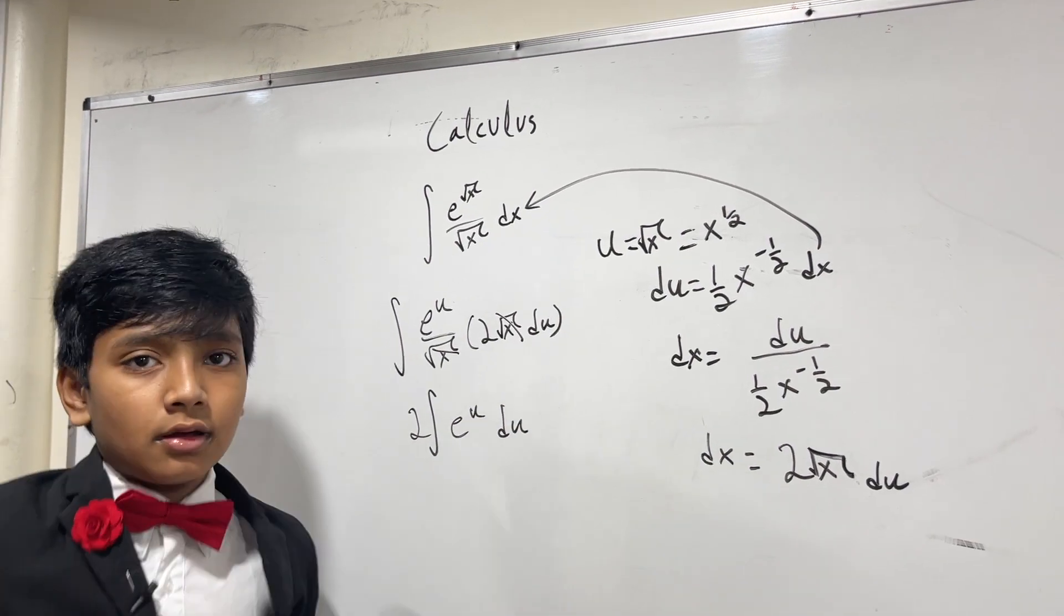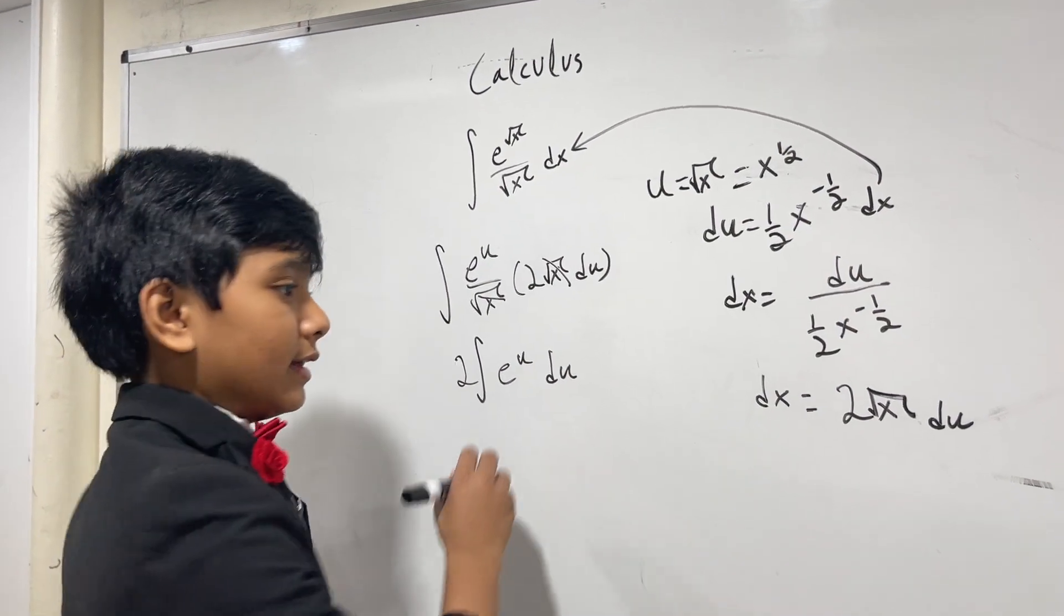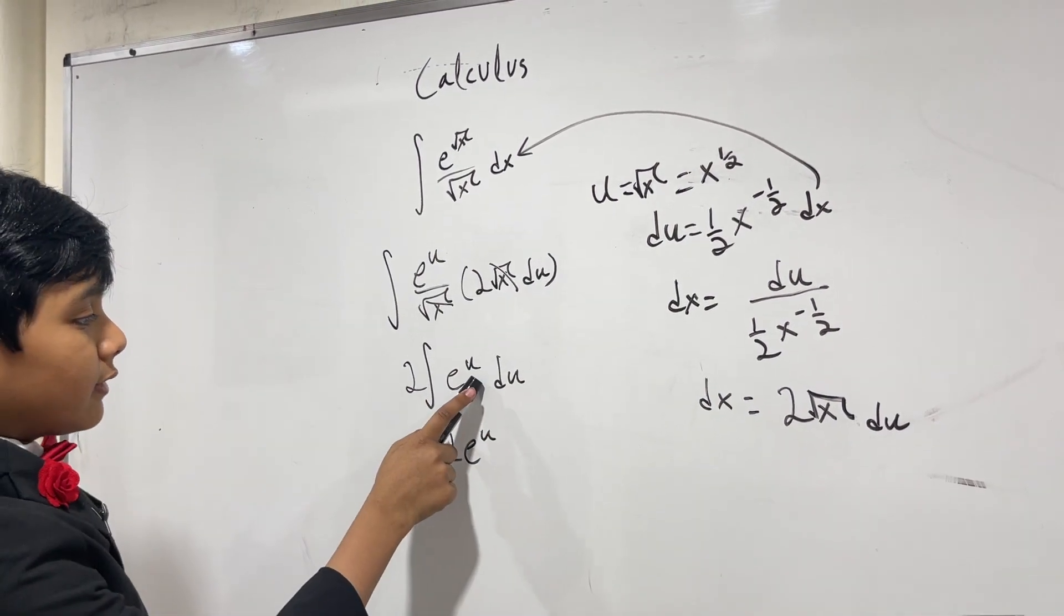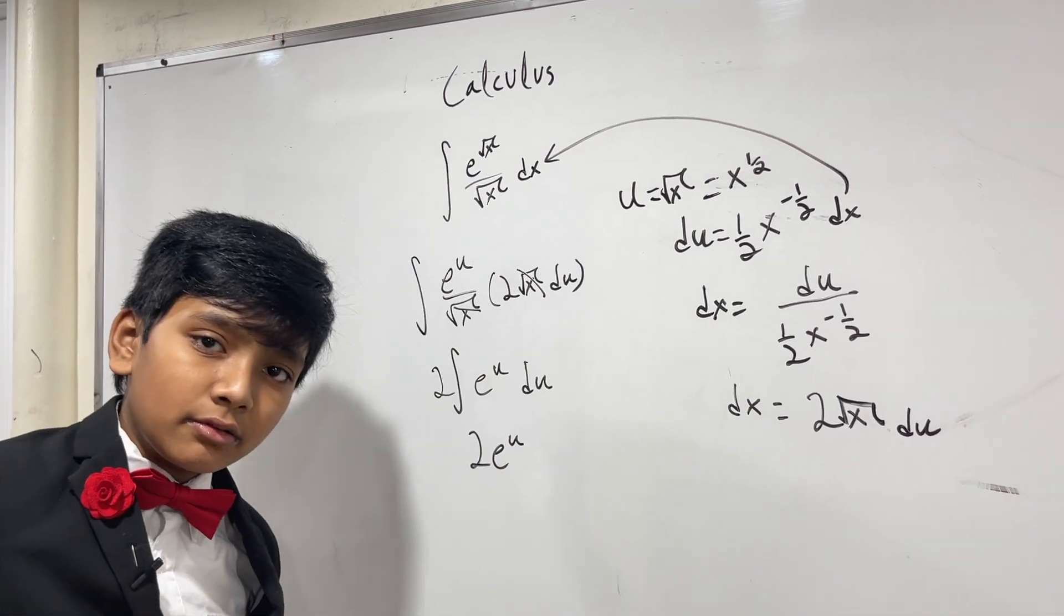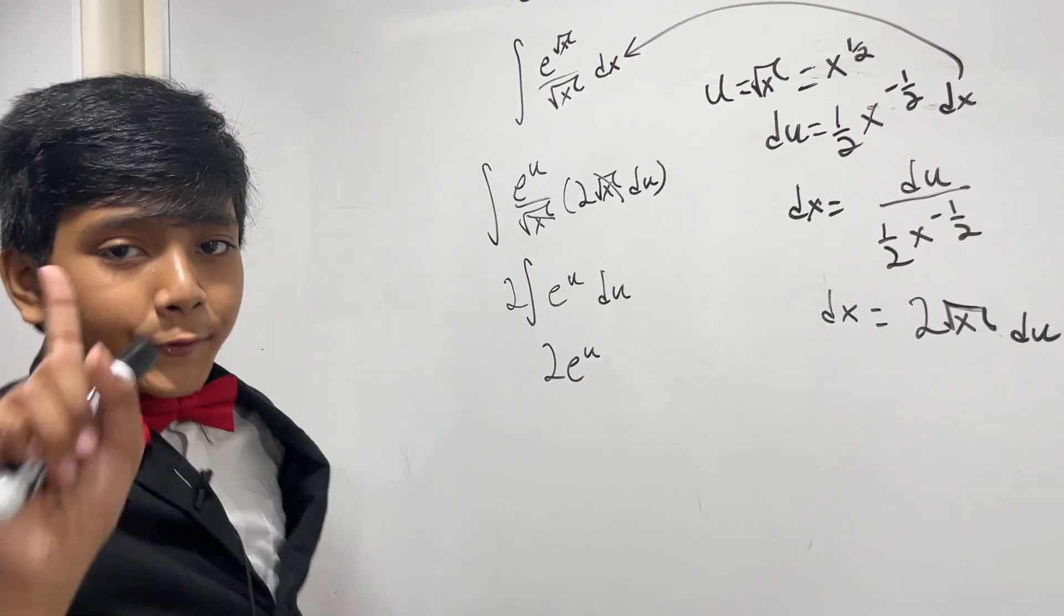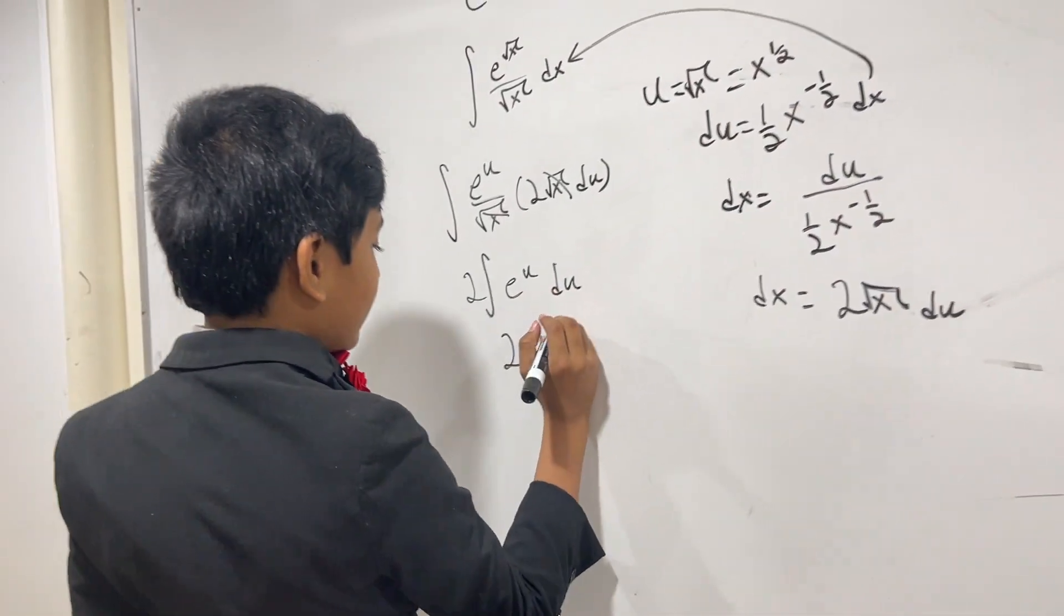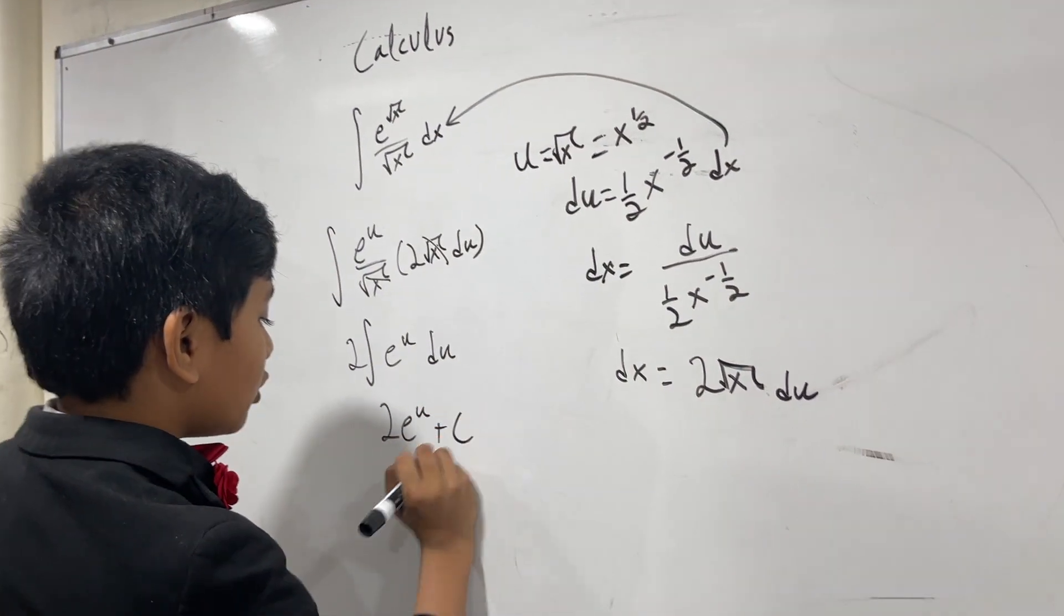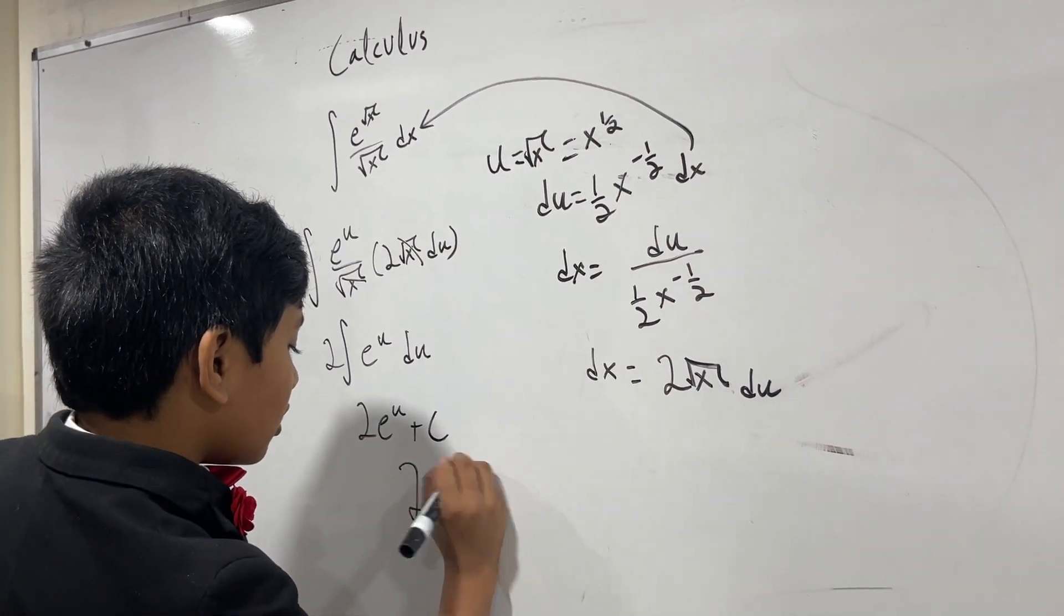The integral of eu is just u, because think about it. What is the derivative of u if we're differentiating with u? Well, it's u now. So, we get 2 eu, or plus c, or 2 e to the root x.